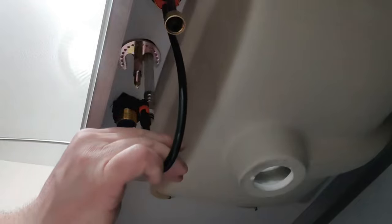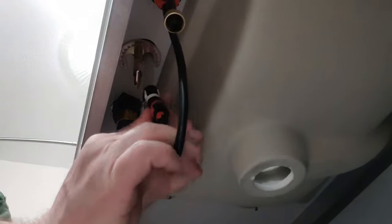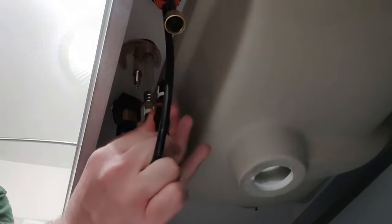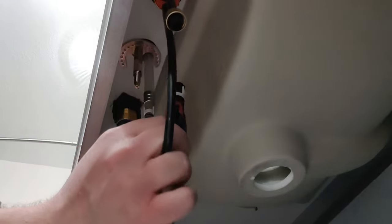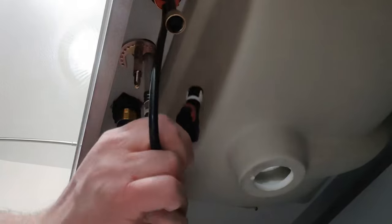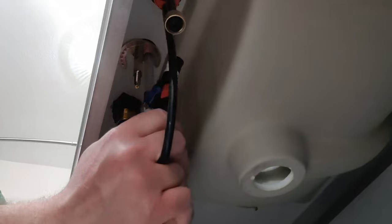Next we're going to connect the water lines coming from each valve to the spout connector. The spout connector is push to click so all you need to do is push the corresponding colored water line into the spout connector and it will click into place.